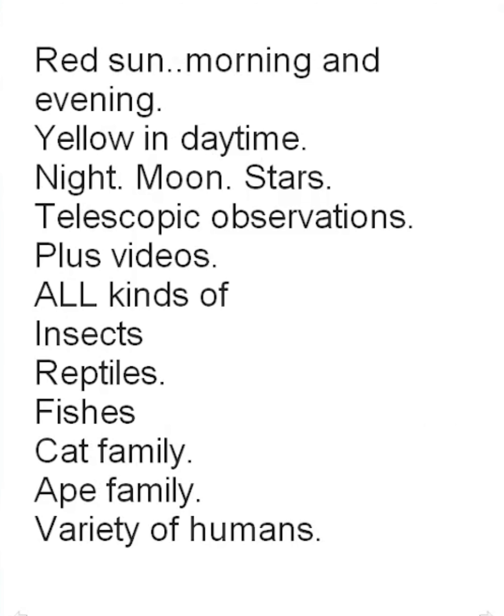Beauty of patterns of flowers, red sun in the morning and evening, yellow in daytime, night moon, stars, telescopic observations — all correct for biology and geography. Videos of all kinds of insects, reptiles, fishes, cat family, elephants, deer, bear — let them observe in childhood as much as possible. That impression leaves not just a sensory impression — it leaves in the mind a sense of wonder. The moon gets cut every day, it's crescent one day, full moon another, no moon another. If the child directs their gaze at that, there will be a question: why?